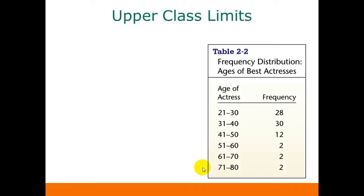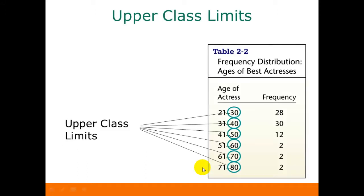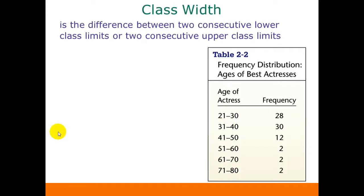The upper class limits are the largest numbers in each class. Notice that because our ages are just given in years, we go from 21 to 30, and then the next class starts at 31. The class width is a difference between two consecutive lower class limits or between two consecutive upper class limits. It is not the difference between the lower class limit and the upper class limit.